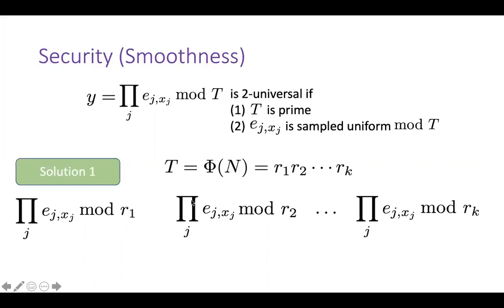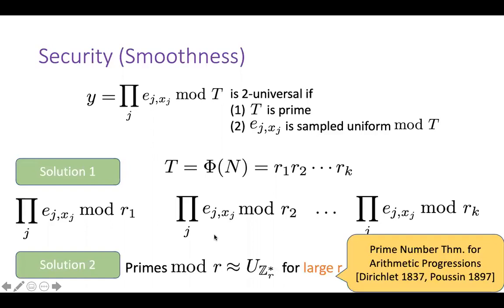For the second issue — E_{j,x_j} values are random large primes, not uniform — we use a beautiful theorem called the prime number theorem for arithmetic progressions (proved in the 1800s and famous in math literature). It states that if you sample a large prime and take it modulo r, you get a distribution close to Z_r*. To the best of our knowledge, something like this has not been used in cryptography before. This theorem works only when the modulus r is large, so we handle small modulus cases differently.